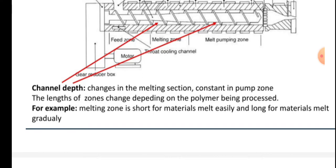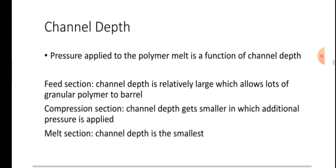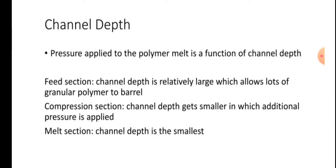Other components include the throat cooling channel, motor, and gear reducer box. Channel depth changes in the melting section and is constant in the pumping zone. The length of zones changes depending on the polymer being processed — for example, the melting zone is short for materials that melt easily and long for materials that melt gradually. In the feed section channel depth is relatively large, allowing lots of granular polymer into the barrel. In the compression section channel depth gets smaller, applying additional pressure. In the metering section channel depth is the smallest.